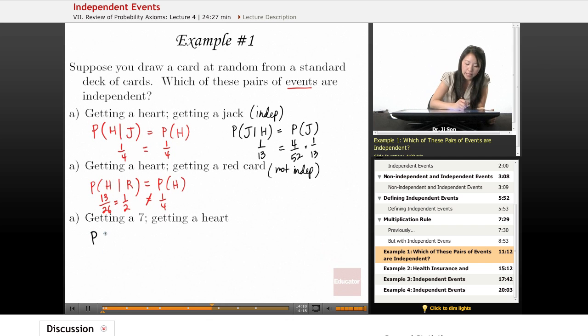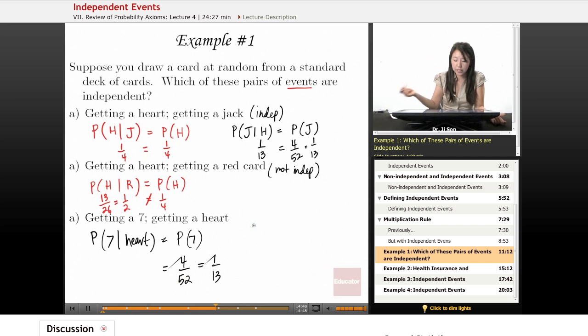The probability of getting a seven given heart. And is that equal to just the probability of getting a seven? Let's see. The probability of getting a seven is that there's four sevens, one for each suite, out of the 52 cards. So four out of 52, and that's going to reduce to one out of 13, because it's a rate of one out of every 13. For every suite, you only have one seven.